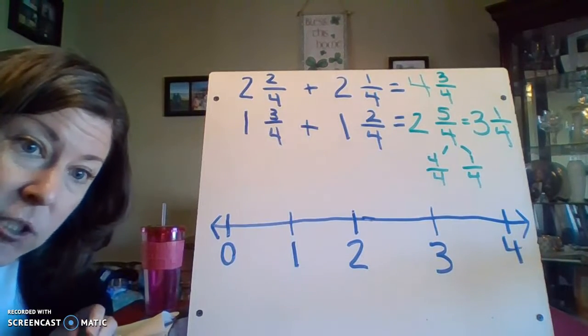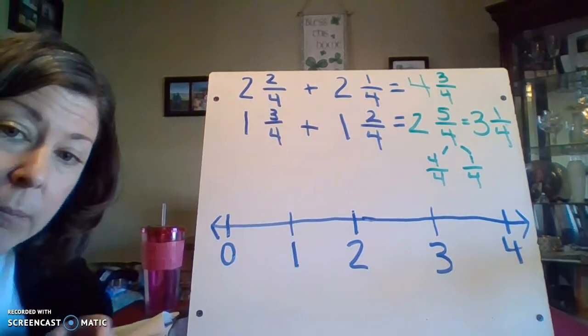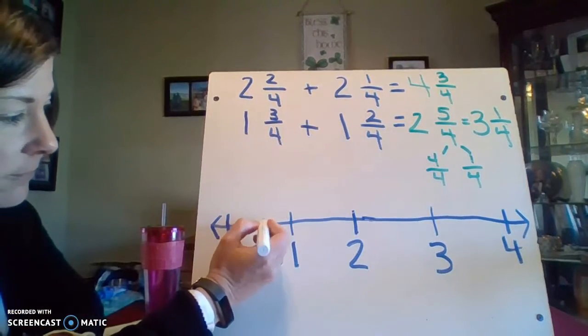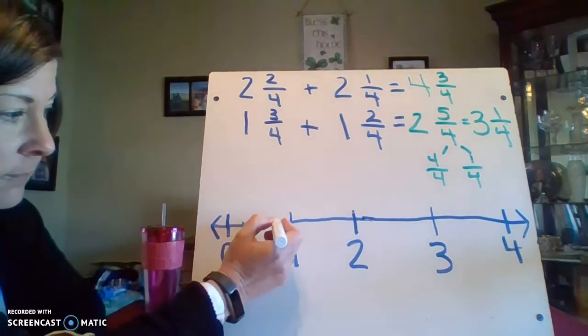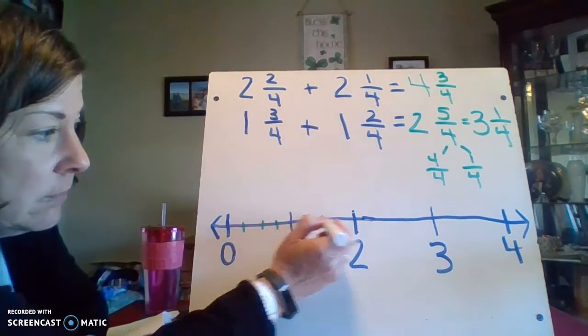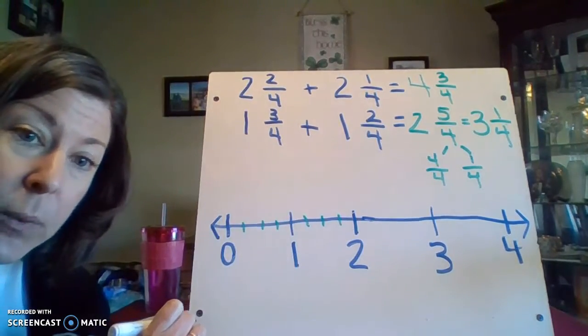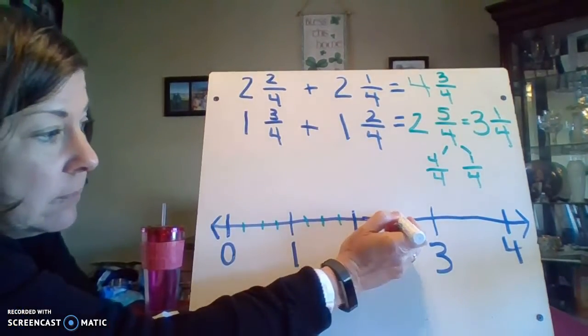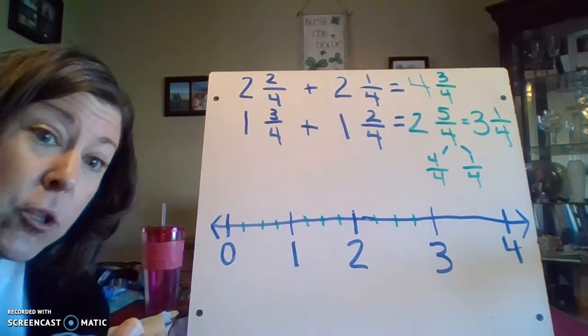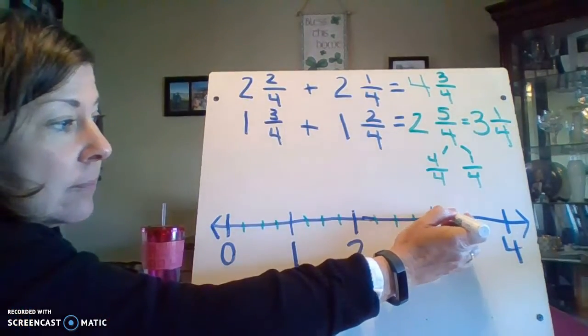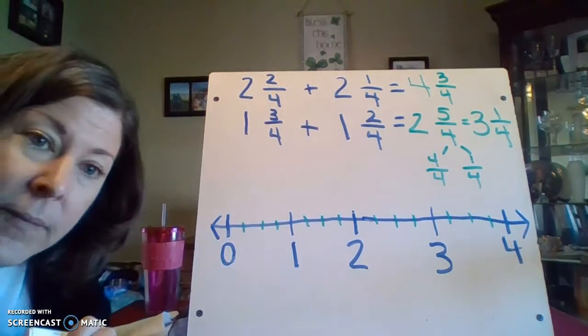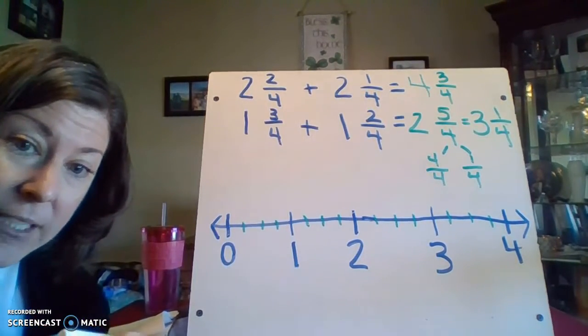The next thing I'm going to do is I'm going to partition my number line into fourths. There's four parts in between zero and one, between one and two, between two and three, and between three and four.